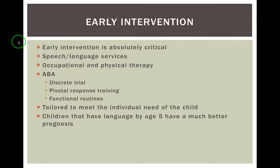Occupational and physical therapy are also really important, especially because we do see a lot of delays with fine motor and gross motor difficulties. Early intervention is most effective when done through an ABA or applied behavioral analysis approach. This includes discrete trial training — literally do this, you get this — and pivotal response training, which is done in the context of typical routines like mealtimes or bath times, providing in-the-moment feedback on the expression of certain skills.